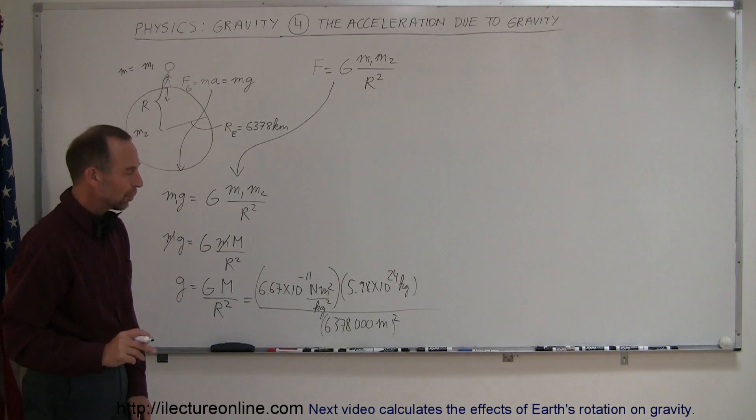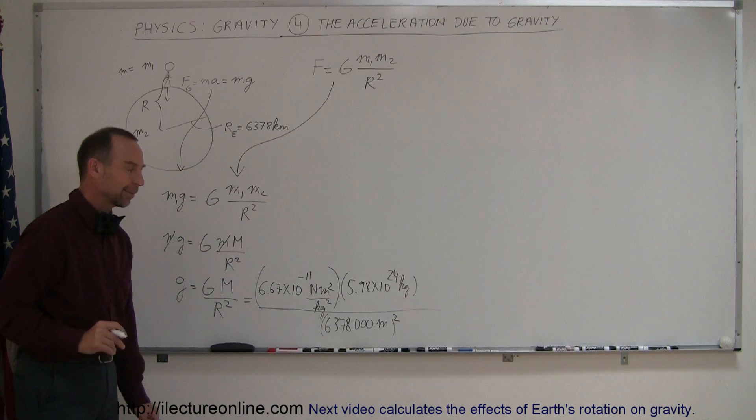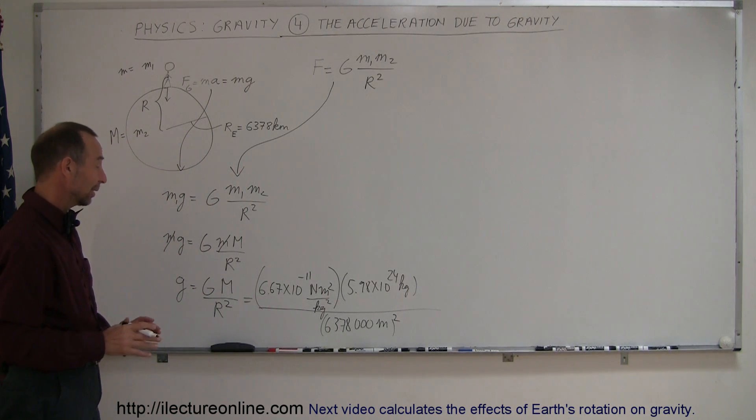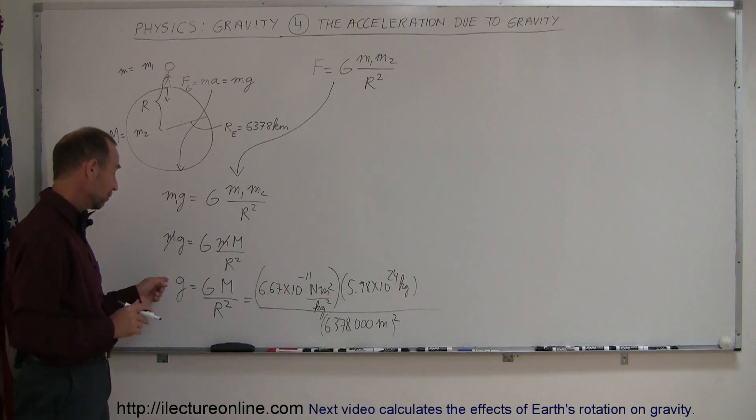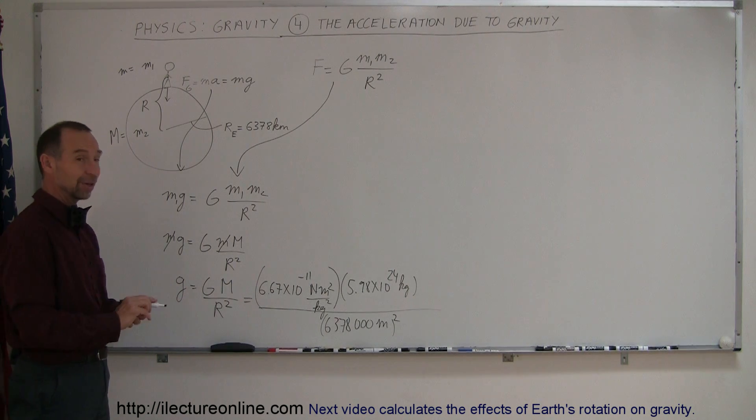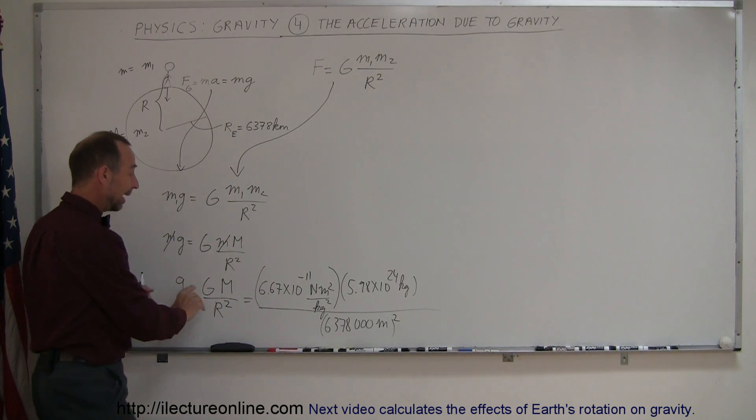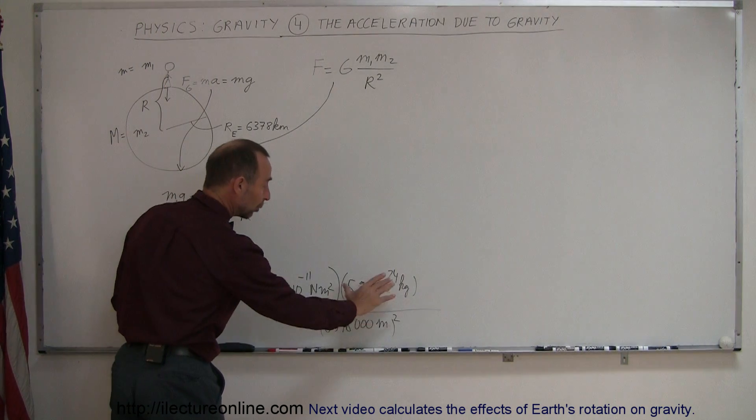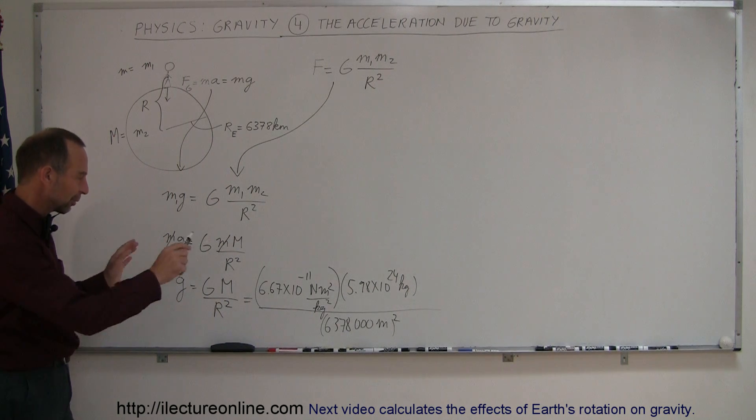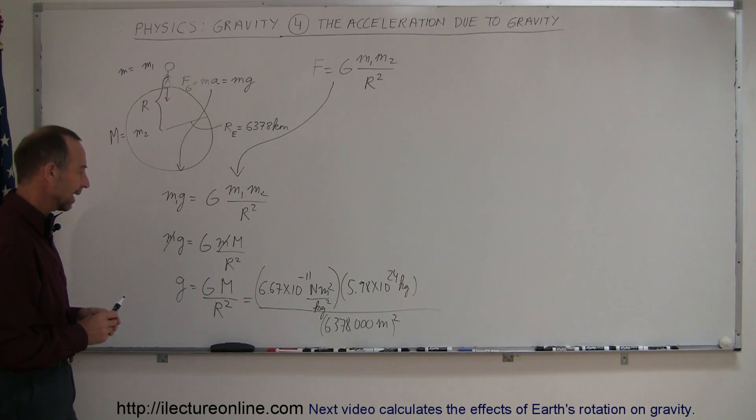Now notice, how did we know that the mass of the earth was 5.98 times 10 to the 24th? What they could have done instead is they could have measured little g experimentally, you drop an object, you measure acceleration due to gravity, you plug that number in there, and then the only thing that would not be known would be the mass of the earth. So you can see that the mass of the earth was somehow calculated like that.